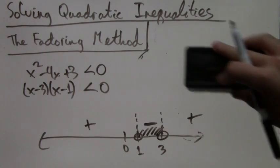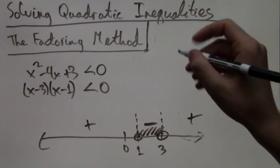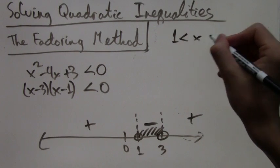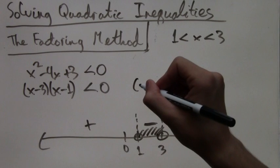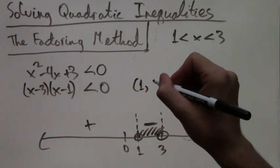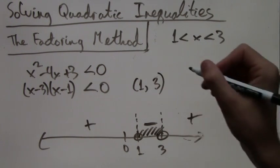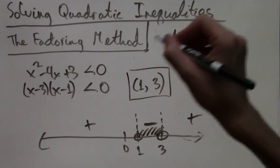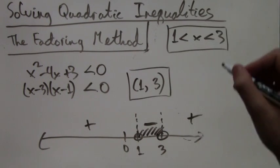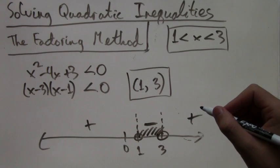It doesn't matter which of these two methods you use. They're both pretty much the same. Either way, you get 1 is less than x is less than 3, or in interval notation, (1, 3) with parentheses. And now we just box in our answers. I hope you found this video lecture helpful. Thank you for watching.